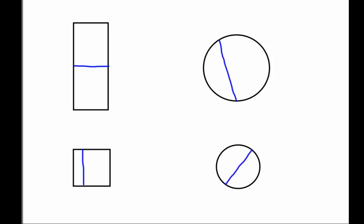Looking at this rectangle, we see there are two shares. Are they equal? It appears as if they are — yes. So we have two equal shares, which means these are both showing halves. This rectangle is showing halves.